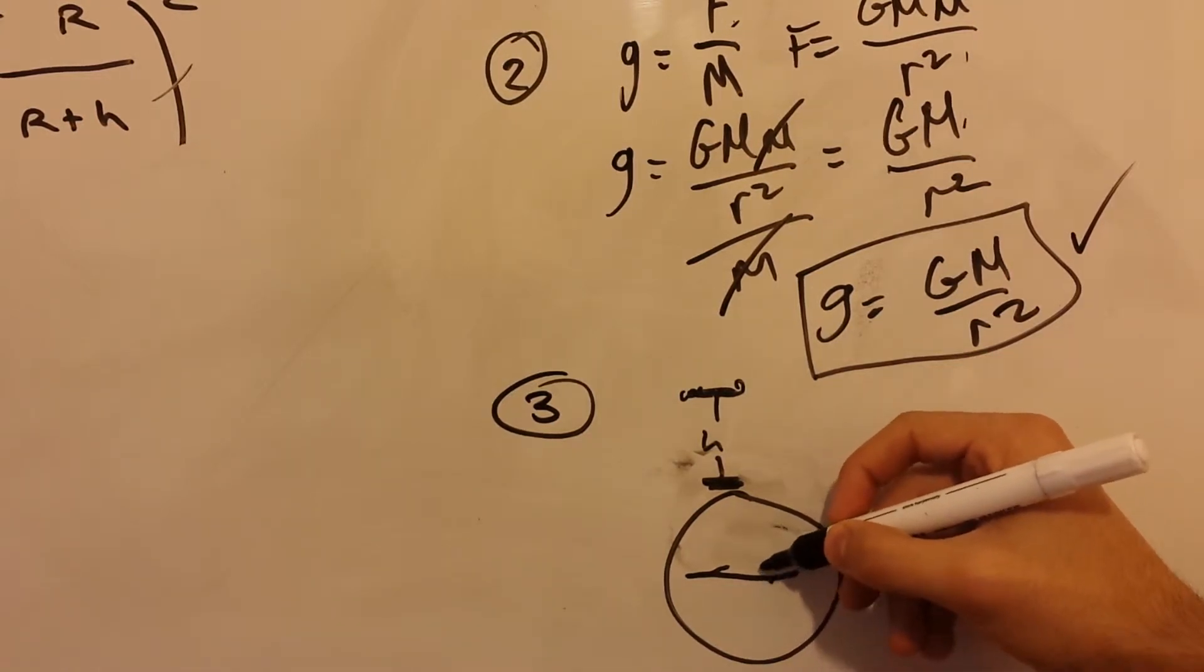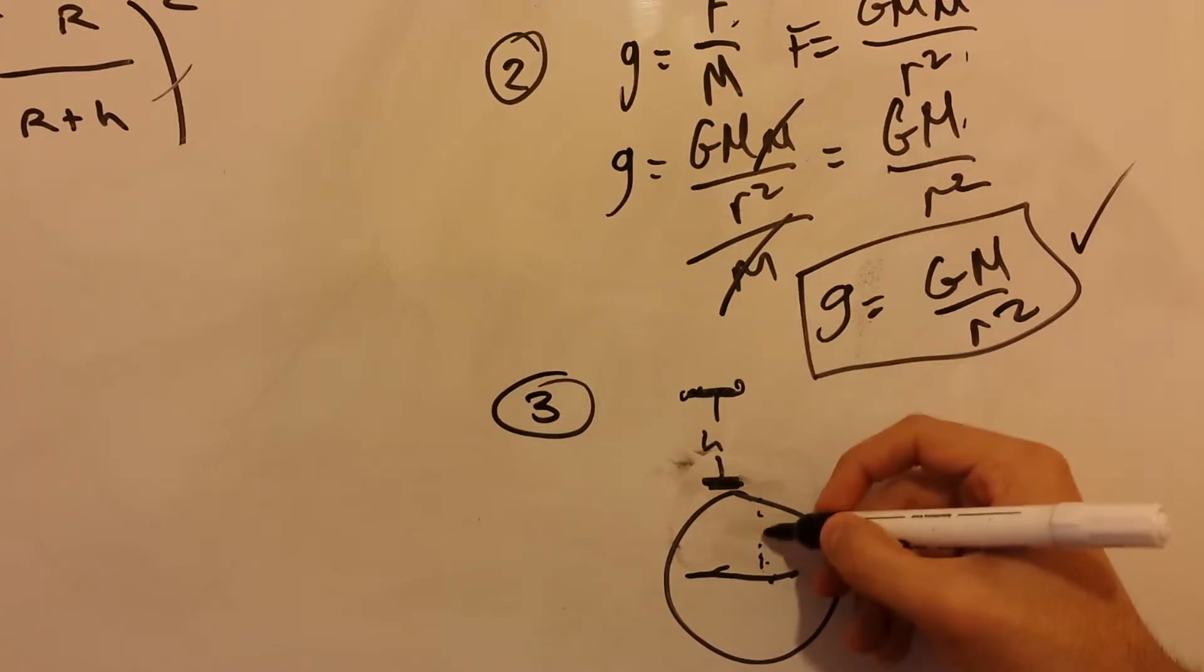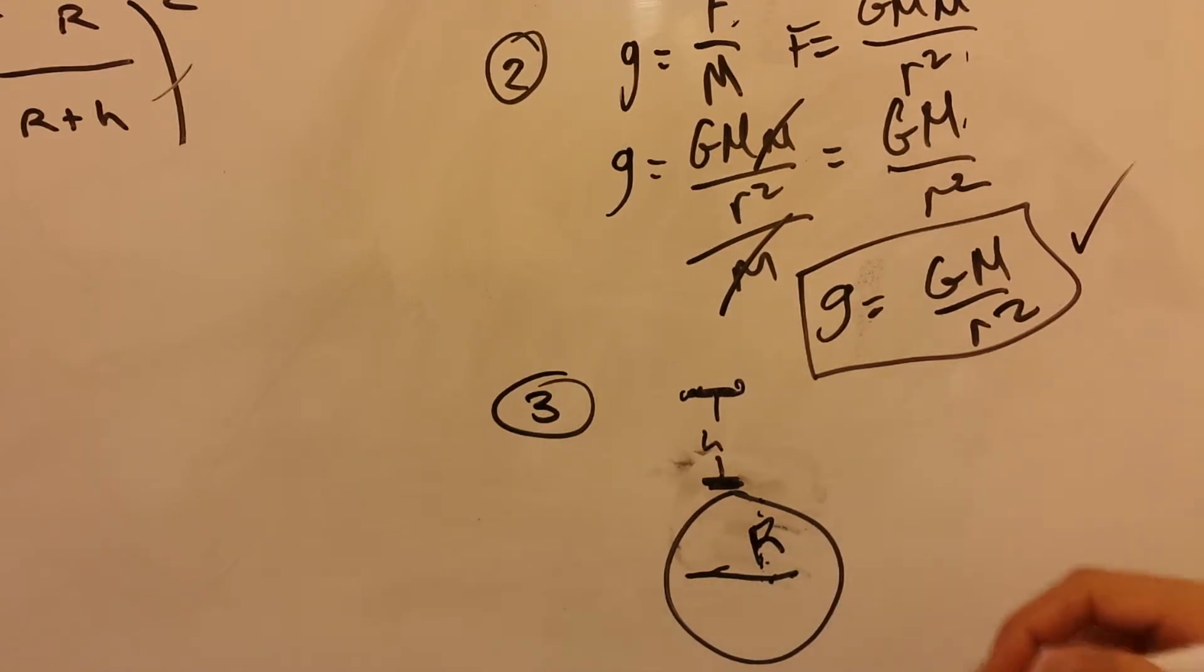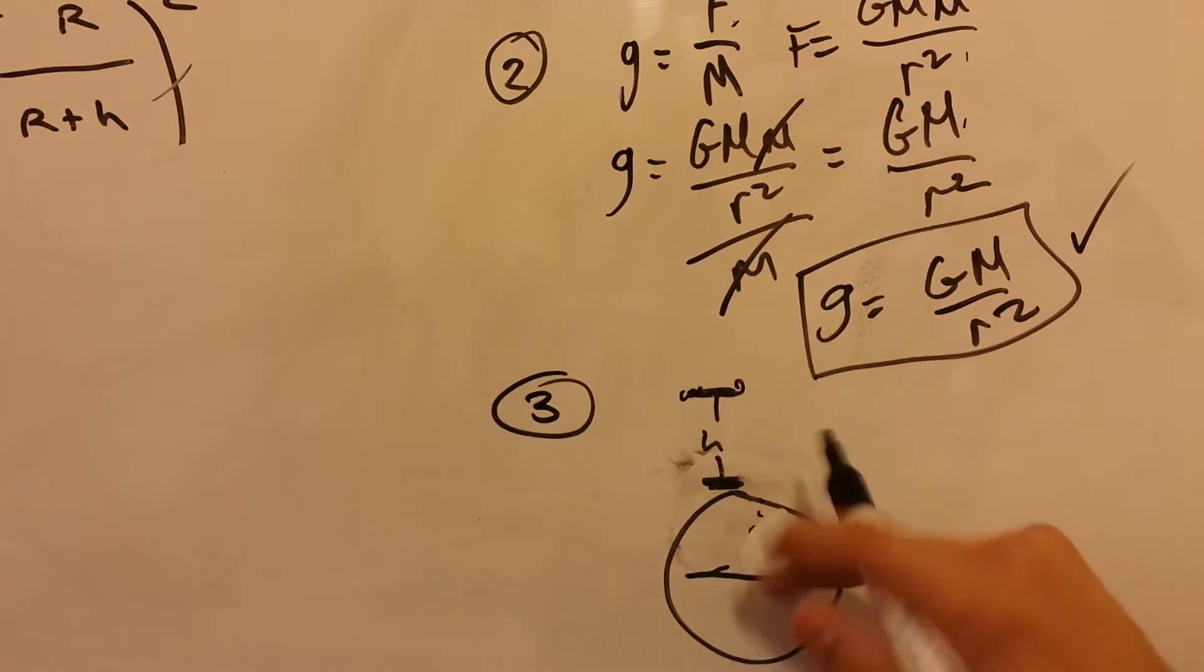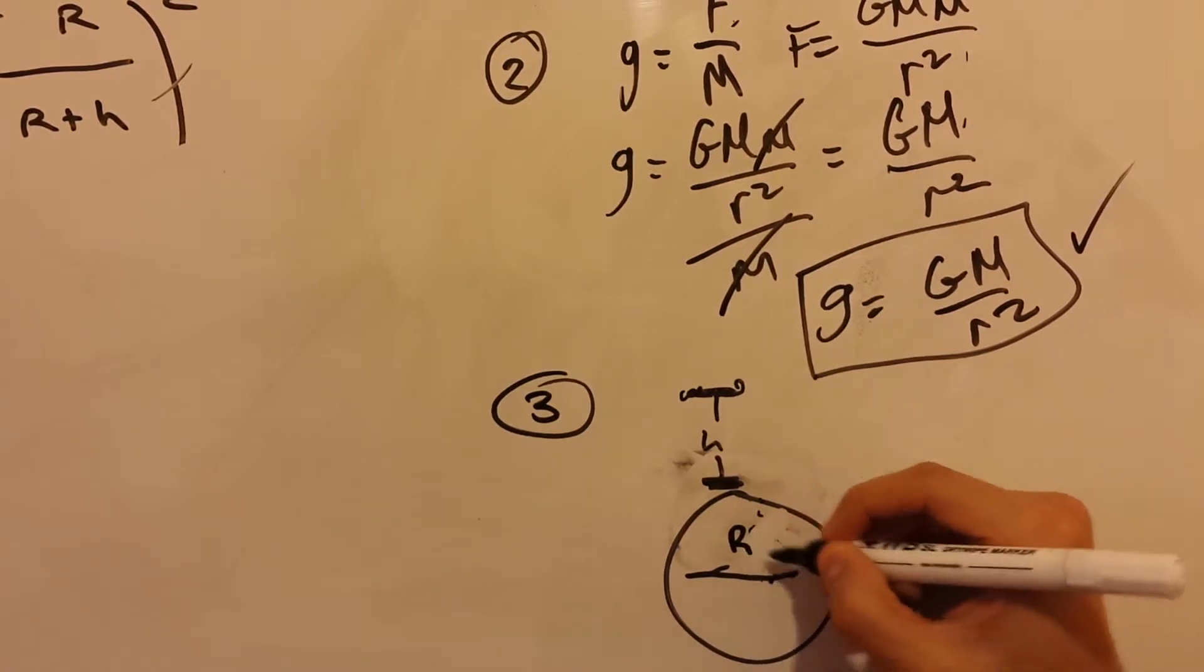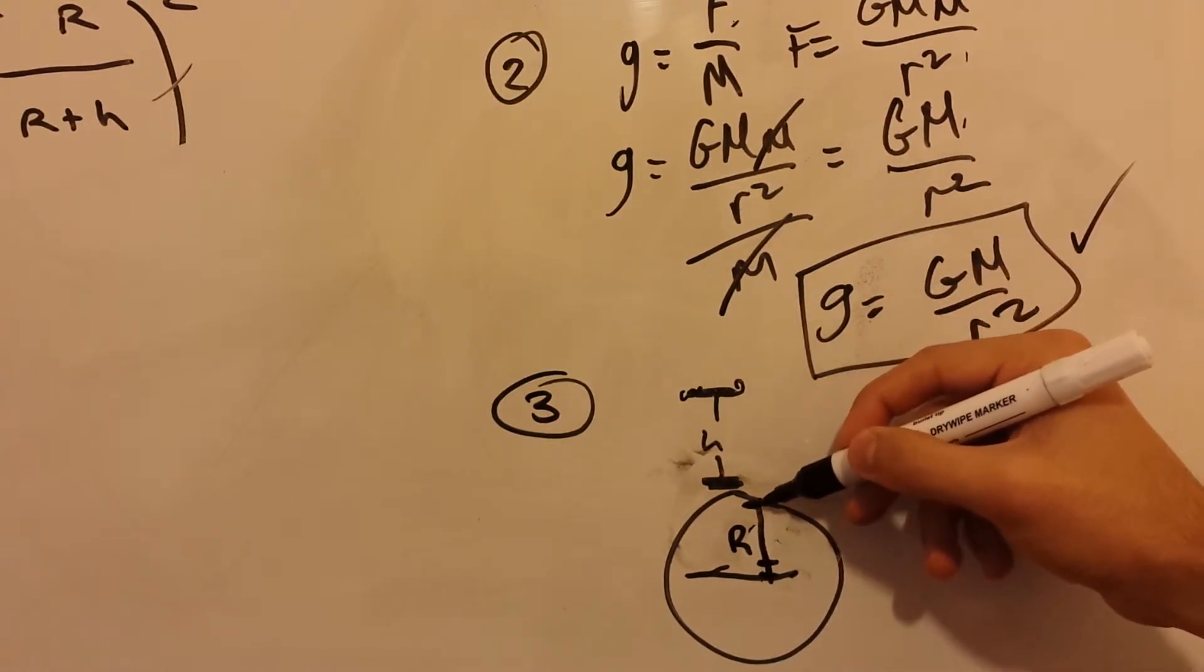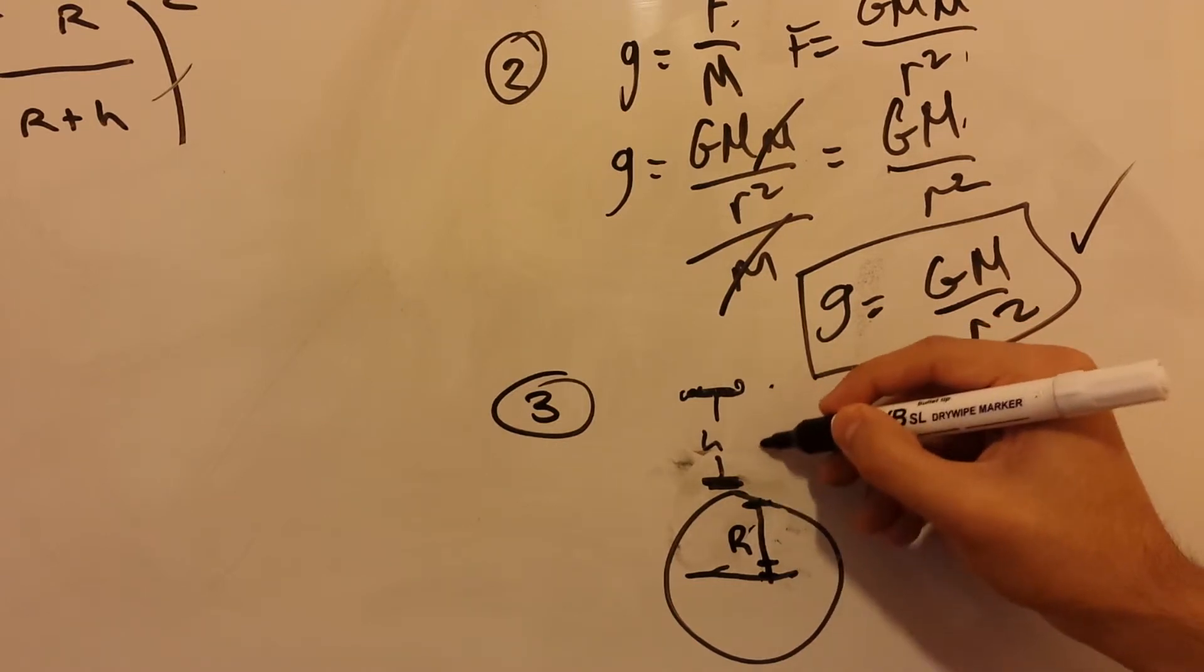Well, if it's from the center and then it goes to the surface, that's the radius, isn't it? From the center to the surface, that's the radius. Let me write it more neatly. And then above the surface is a height, h.